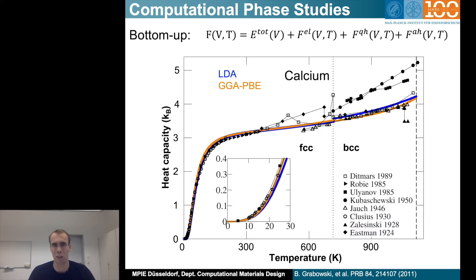To give you a brief motivation of what can be achieved in calculating thermodynamic properties, I want to show here the heat capacity for calcium over temperature and compare theoretical results colored in blue and orange with experimental results shown as black dots.